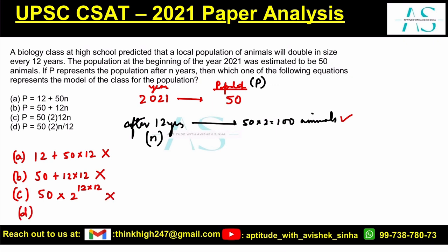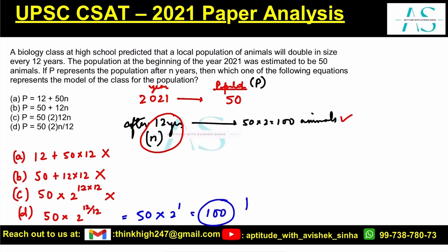Let's check option D: 50 times 2 to the power of n divided by 12. With n equal to 12, that's 12 over 12, which cancels to 1. So this is 50 times 2 to the power of 1, which equals 100 — the correct value for P after 12 years. Option D is the correct answer; all other three options are eliminated.